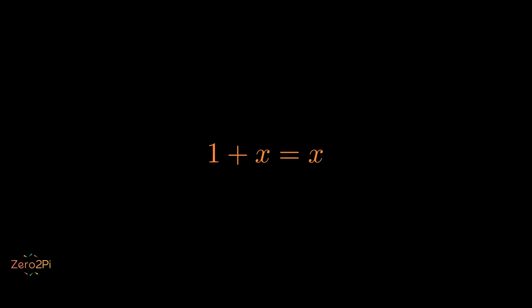Let's start by solving this algebraically. If 1 plus x equals x, then we can subtract x from both sides, giving us 1 equals 0. This clearly seems to be a contradiction in standard arithmetic.